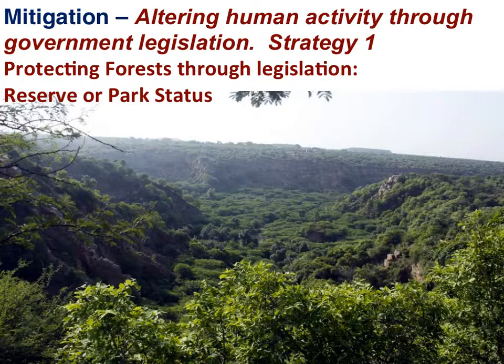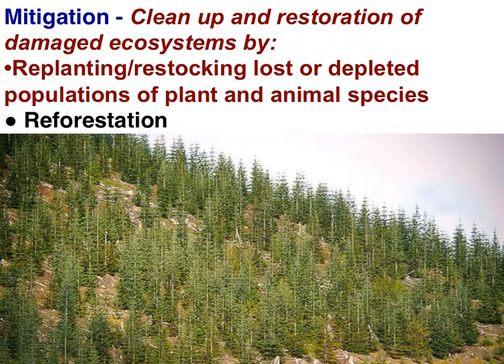A mitigation strategy to reduce the causes of climate change would be to protect forests through legislation, create forest reserves, or create national parks — a level one strategy. A mitigation strategy would also be to replant or restock lost or depleted populations of plant species. Reforestation is a level three strategy for the mitigation of climate change because plants remove carbon dioxide from the atmosphere when they photosynthesize.